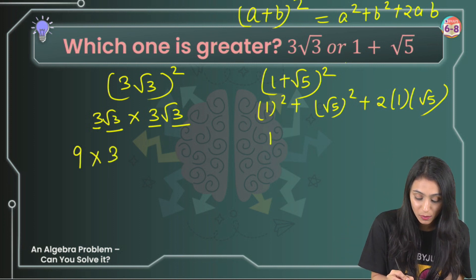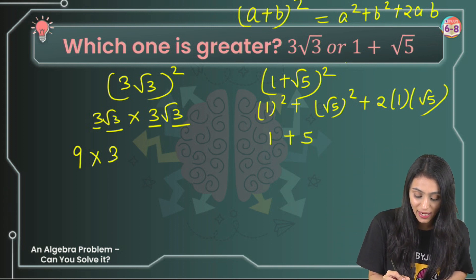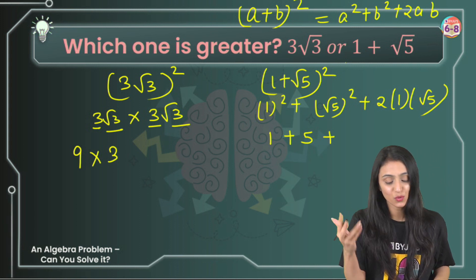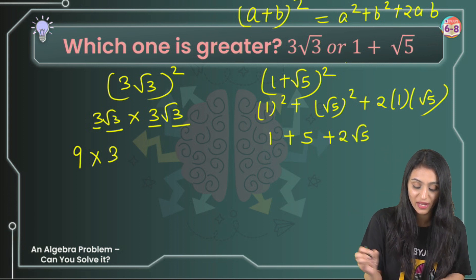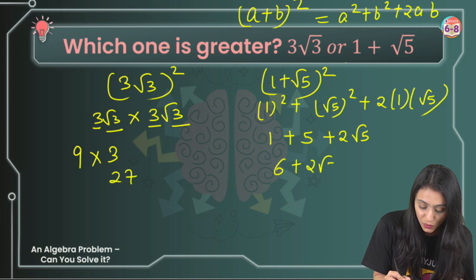1² is going to be 1 plus √5 squared. That means √5×√5, this becomes 5. And this is 2×1×√5, that's going to be 2√5. So till now we have 27 here and this is 6+2√5.